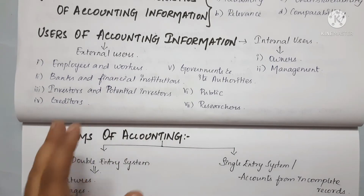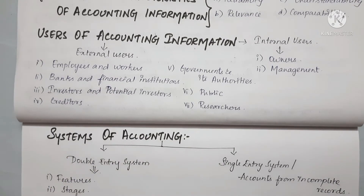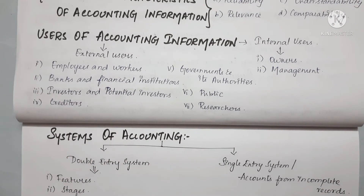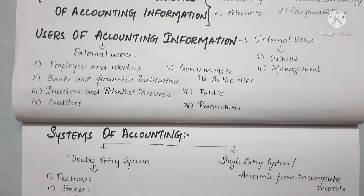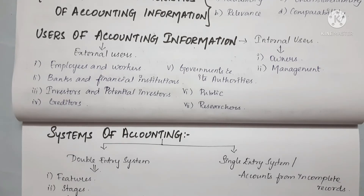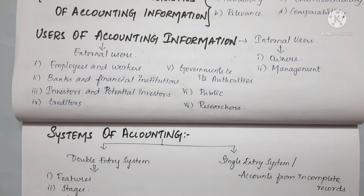External users include employees and owners, who are interested in bonuses, PF, and ESIC-related information. Banks and financial institutions need accounting information to determine whether loans can be repaid correctly, to ensure safety and recovery of the amount, and to check interest and EMI payments.